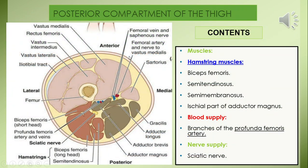The diagram is a mid-section of thigh approximately 15 centimeters below the inguinal ligament, showing the cut section of the femur and the region of linea aspera. Three main septa arise from fascia lata and insert on the linea aspera — the medial lip, lateral lip, and intermediate region — forming the medial, lateral, and posterior intermuscular septa.